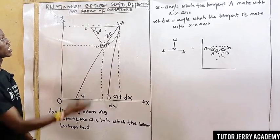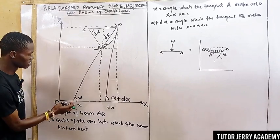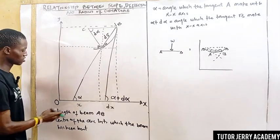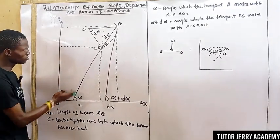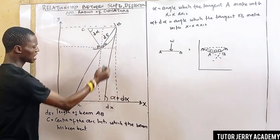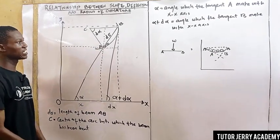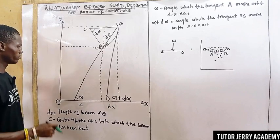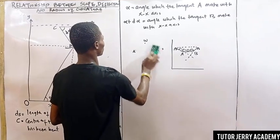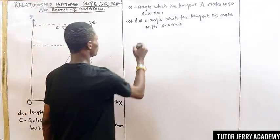My alpha is the angle that the tangent at A makes with the x-x axis — here is our x-x axis and here is our y-y axis. At point B, we have the angle that the tangent at B makes with the x-x axis.